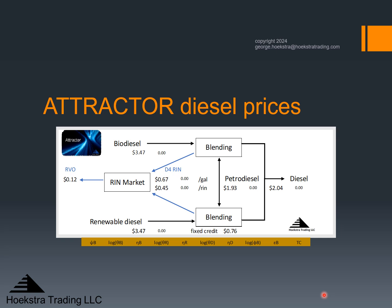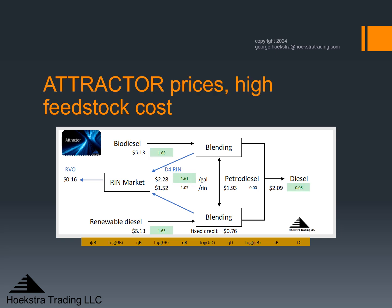For example, we're going to increase the cost to supply biodiesel and renewable diesel by increasing the price of the feedstocks used to produce them. Here we've increased the cost to supply biodiesel to $5.13 — the green boxes show how much has changed from the base case, in this case up by $1.65 — and same for renewable diesel. The main result is that the RIN price goes up almost dollar for dollar to $1.61 per gallon. The market price goes up a little because the cost to supply biodiesel and renewable diesel has gone up.